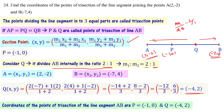The trisection points for the line segment AB are P = (-1, 0) and Q = (-4, 2).